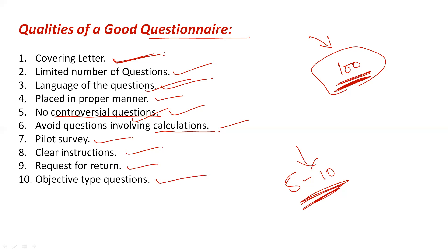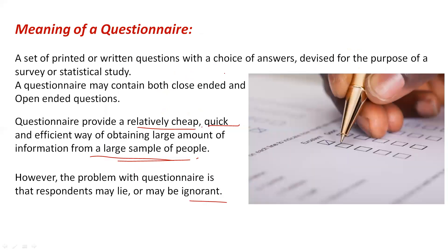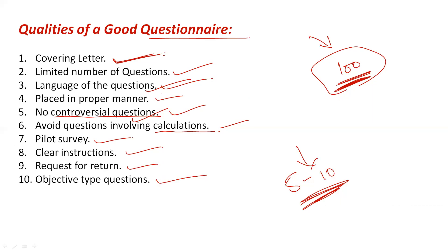Finally, the questionnaire should have objective-type questions, similar to closed-ended questions. Here, a lot of description is not required — you just choose an option: yes or no, true or false, agree or disagree, strongly agree or strongly disagree. Such questions are easy to answer and less time-consuming. Open-ended questions increase the chances of being ignored because people don't want to write long descriptions.